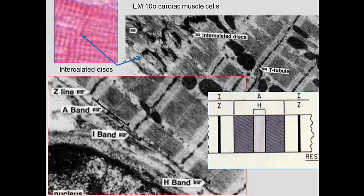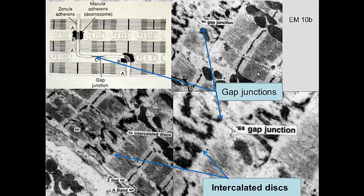Returning to intercalated discs: we can see them here, with sarcomeres from Z-line to Z-line, and the A and I bands. There are also transverse tubules. Looking at the intercalated disc, there are gap junctions. The gap junctions themselves don't hold the cells together — the macula adherens and fascia adherens hold the cells — but the gap junctions allow communication from one cell to another, enabling stimulation to pass between cells and regulate uniform contraction.